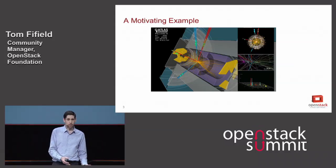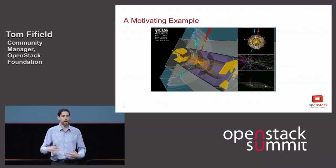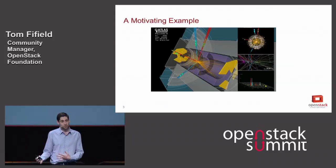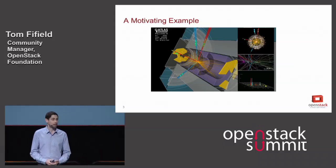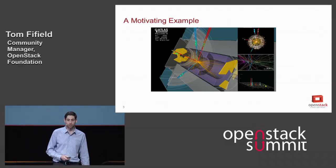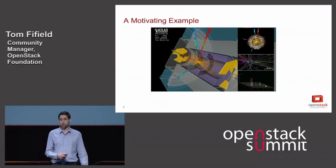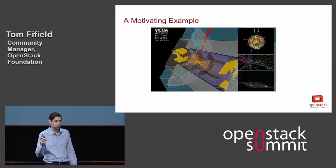The LHC is currently in shutdown and being upgraded to achieve more powerful energy to discover new physics. The IT team at CERN is taking the opportunity to upgrade their IT infrastructure at the same time. The good news for us is they're building their infrastructure based on OpenStack — right now running 60,000 cores and moving to 300,000 cores by the end of 2015. It's a pretty amazing project and this is the reason we build OpenStack.